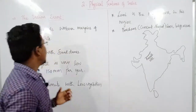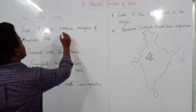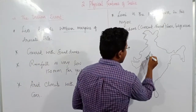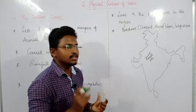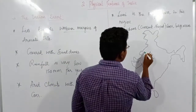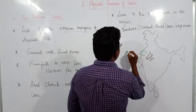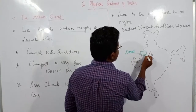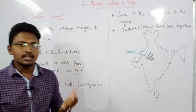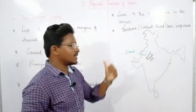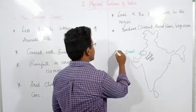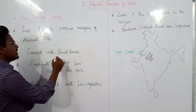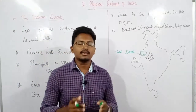This Indian Desert is mainly located towards the western margins of the Aravalli Hills. If you look into the map, you can see the Aravalli range. On the western margins — in the map you can locate this Indian Desert in this region. There is one more name for this desert: we also call it the Thar Desert. The next very important thing is that it is completely covered with sand dunes.